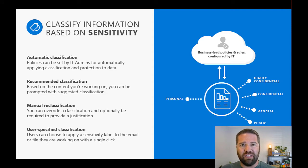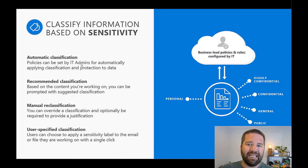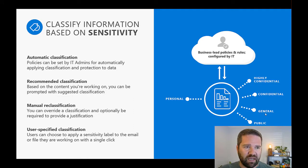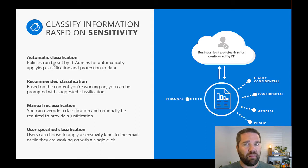The end-user essentially working on a Word document file, and because of whatever criteria you set, you can have automatic classification happen to it. So maybe every document in the org is going to start out as general — like Contoso business data, Contoso general, whatever you decide. We can also recommend data based on what's in the document, or automatically classify it based on content that's in it.